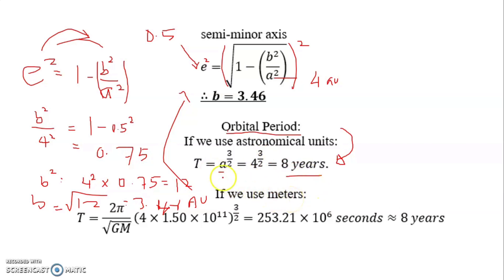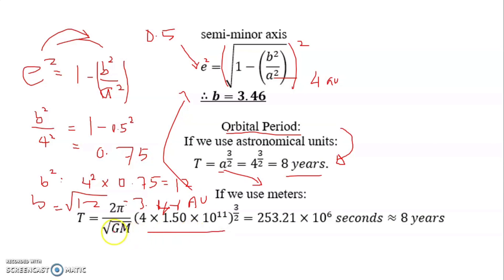If you use SI units with a in meters, convert 4 AU to meters: 4 × 1.5 × 10¹¹ = 6 × 10¹¹ m. Substituting into the equation gives 253.1 × 10¹² seconds, which converts to the same answer of 8 years.